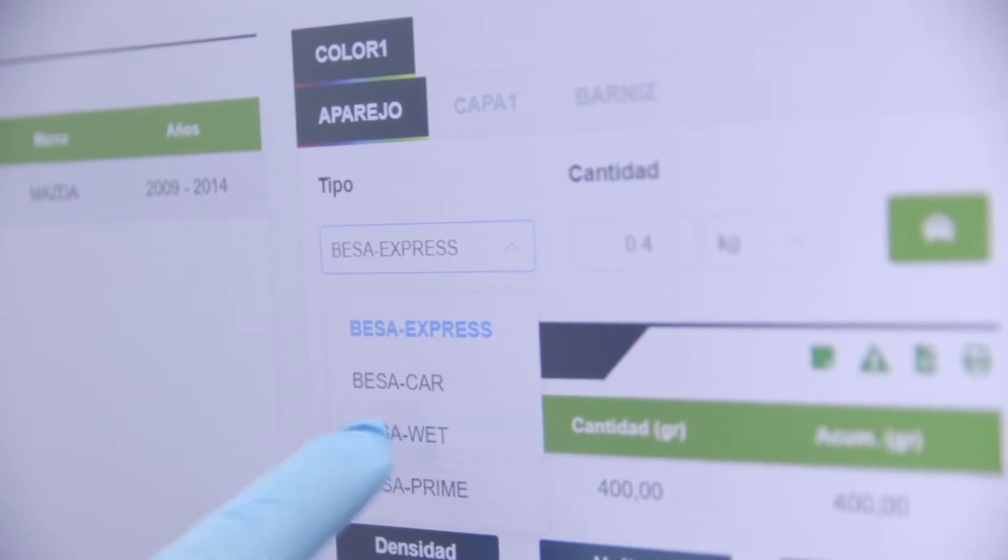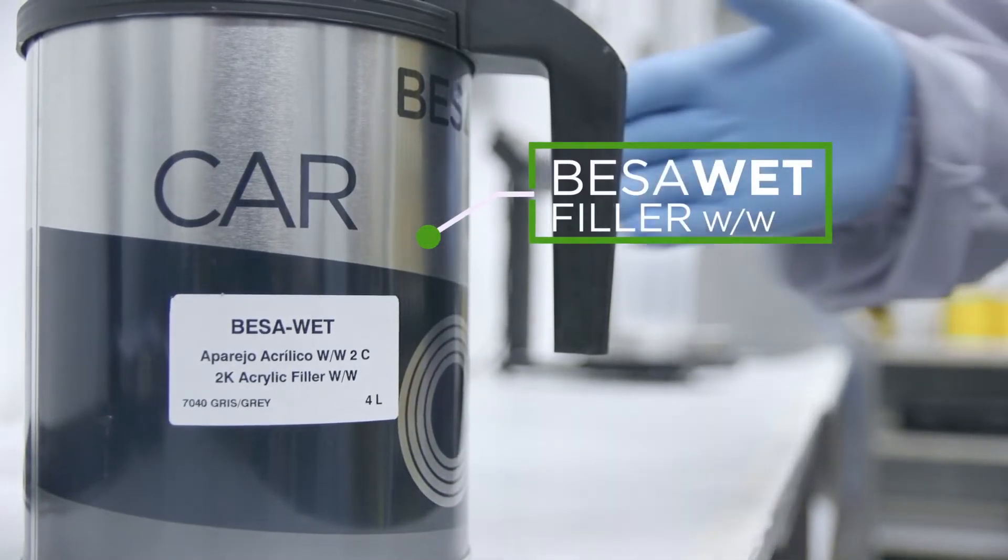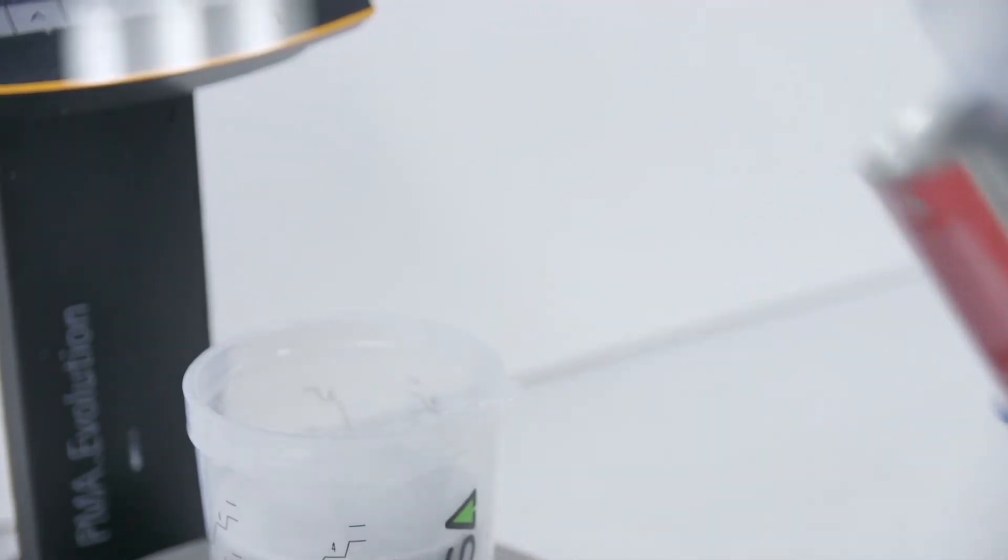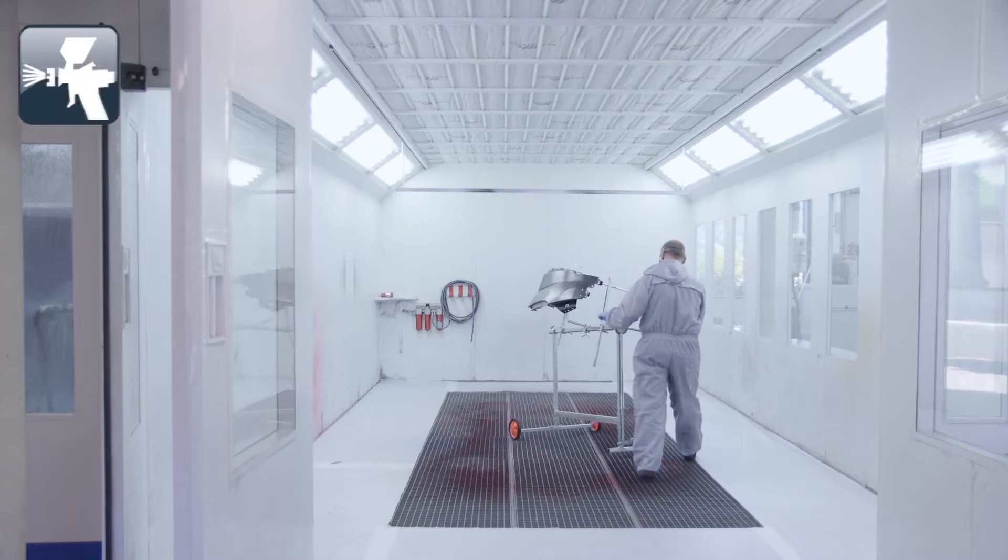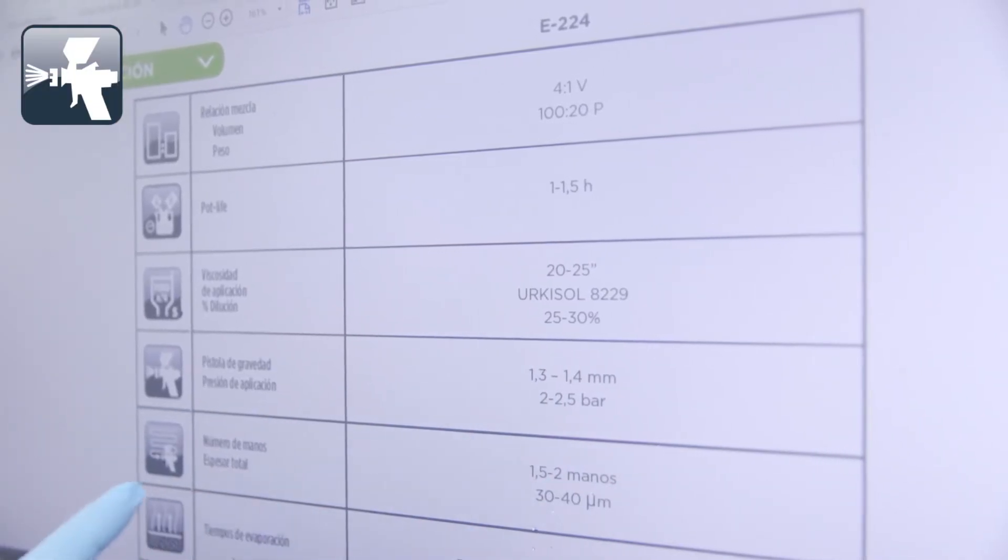Prepare the mixture following the specifications provided on the product's technical datasheet, considering aspects such as temperature and humidity. Use a 1.3 to 1.4 mm fluid nozzle and a 2 to 2.5 bar pressure gun.